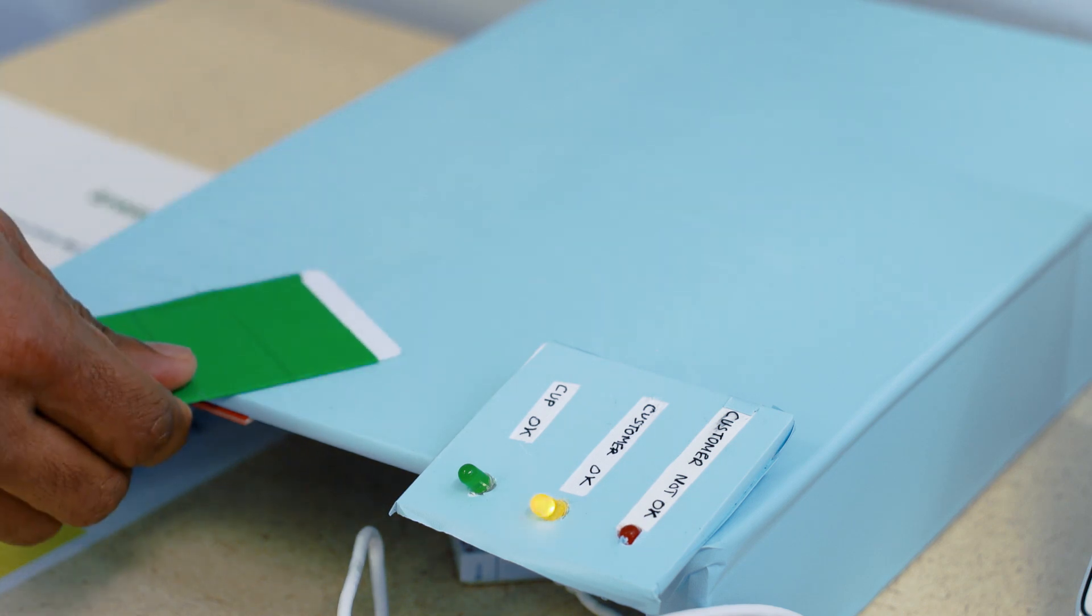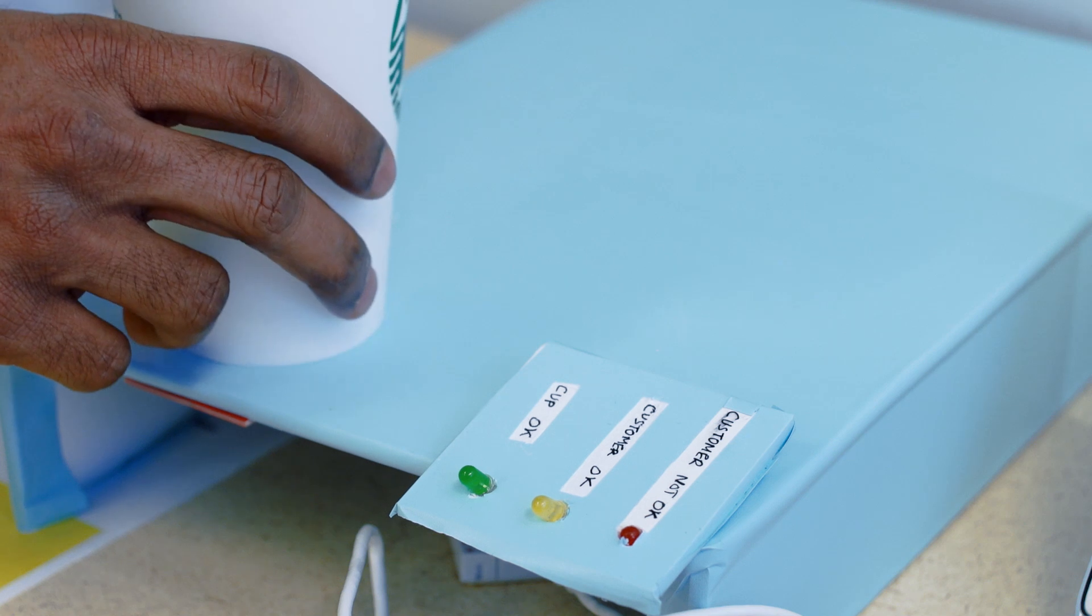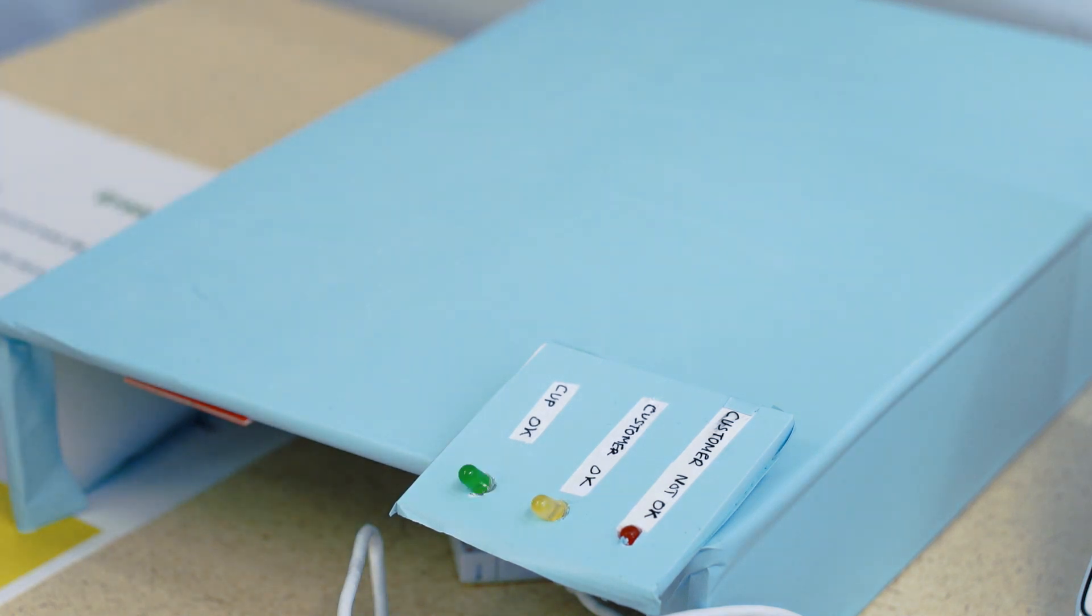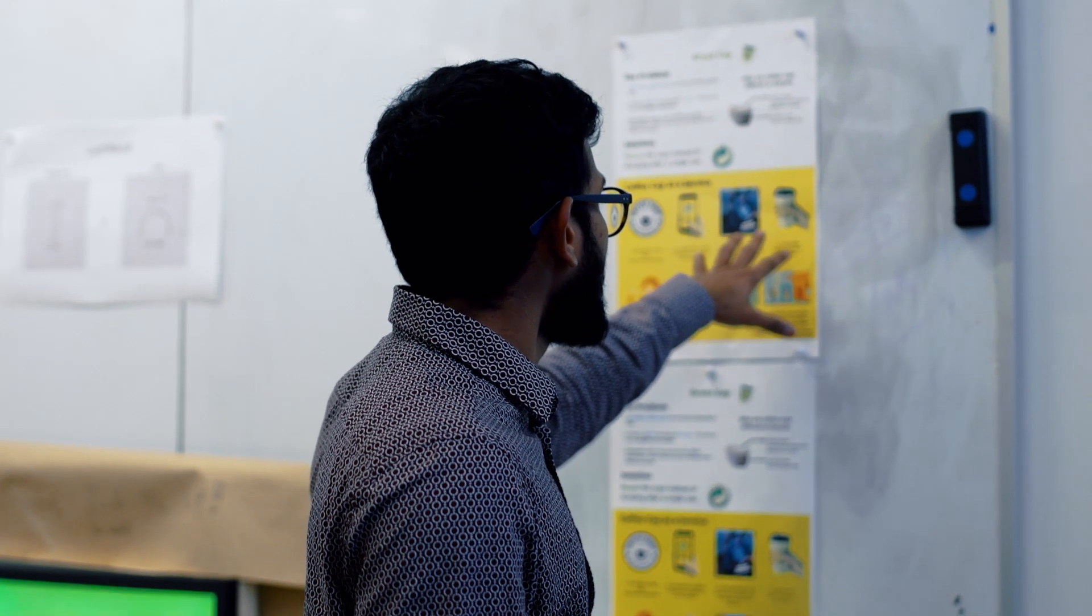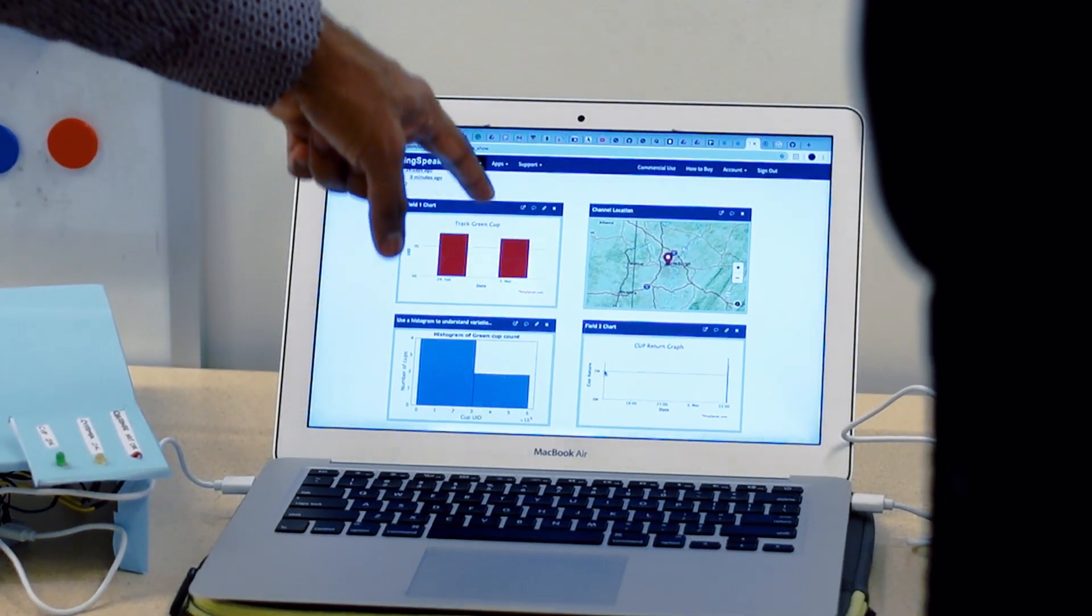If you're a customer, you'll be getting one of those customer ID cards. The person at the coffee shop is going to scan one of the cups, and when they scan it, the data goes into the database. As a customer, you have your own ID that gets scanned as well, so we have two databases.